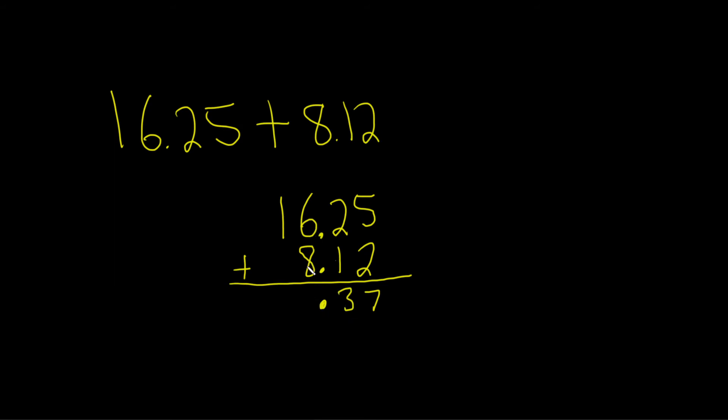6 plus 8 is 14. So 14 is a number that's too big. So what you do is you write the 4, and then you carry the 1. So you bring it up there. And then you add the 1 and the 1, and that gives you 2.